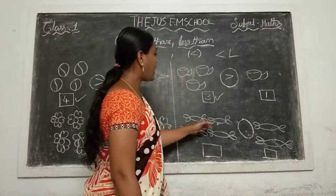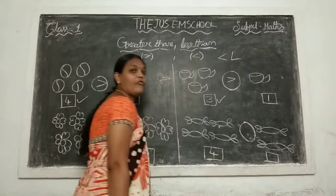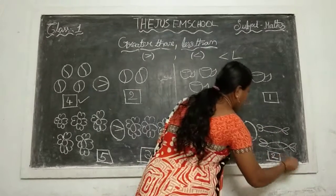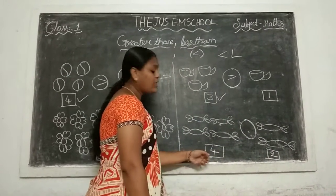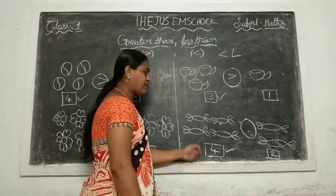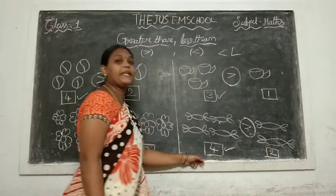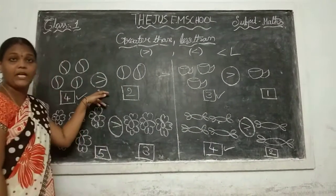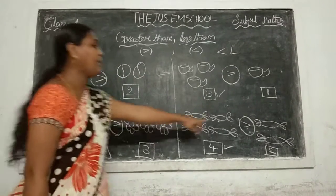And this one — see: 1, 2, 3, 4 chocolates are here. How many? 4. And here: 1 and 2, so 2 chocolates. We compare 4 and 2. Which number is the big number? 4 is the big number, so we will put greater than. The mouth is open to the big number side.